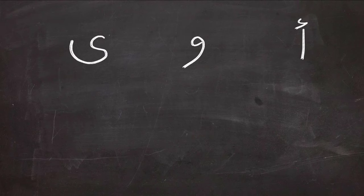So the long vowels are alif, waw, and ya, and they have to be preceded by a short vowel of the same nature: fatha, dhamma, or kasra.